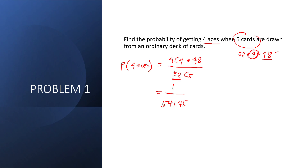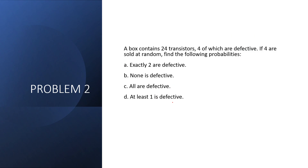Problem number two: a box contains 24 transistors, four of which are defective. If four are sold at random, find the probabilities. Letter A: exactly two are defective. Since there are four defectives and we need exactly two defective, we also get two non-defective from the remaining 20 transistors.